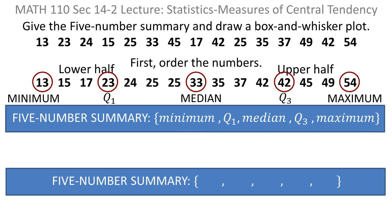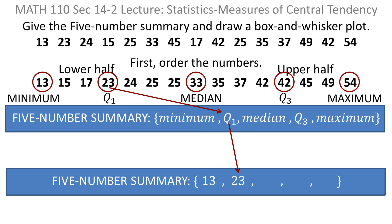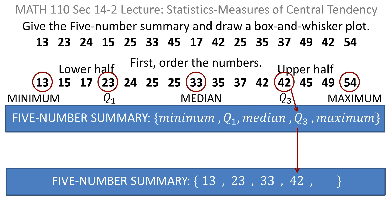So the five-number summary just consists of the minimum, the first quartile value, the median, the third quartile value, and the maximum. So there you have the five-number summary.